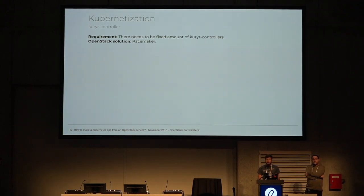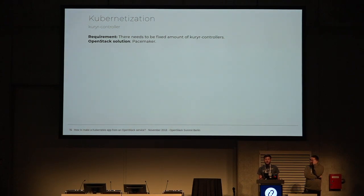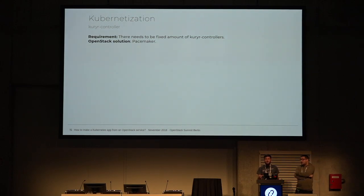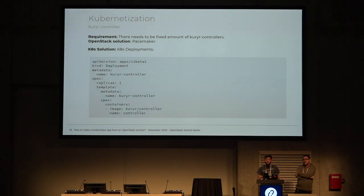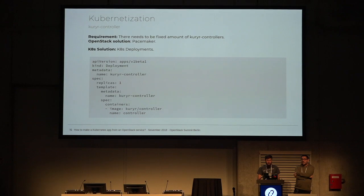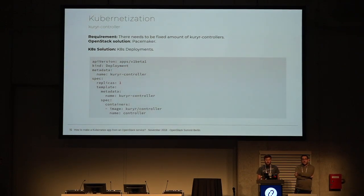Let's go through the requirements of the Kuryr Controller. We've recently introduced the active-passive HA feature, but before that we need to make sure there is only one Kuryr Controller instance. In OpenStack, that would be solved by using Pacemaker. In Kubernetes, this is solved by deployments - we simply create a deployment primitive for the Kuryr Controller with a fixed number of replicas. This primitive keeps the number of pods at a constant number of replicas.